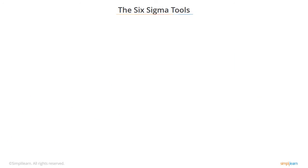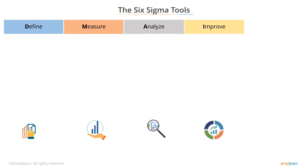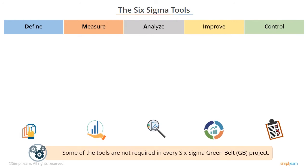Now we'll look at the tools used in each phase. The list of tools corresponds to the DMAIC phase in which they are used. The use or application of these tools gives the expected deliverables in each DMAIC phase for a greenbelt. Some of the tools listed are not required in every Six Sigma greenbelt project. These tools give us an insight into the problem and lead us toward the real issues in our processes. With more experience, you are likely to know the tools you need for your projects.